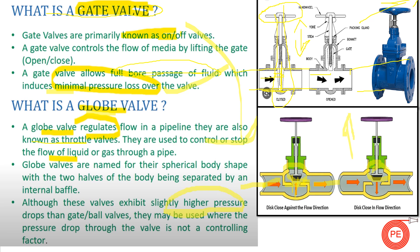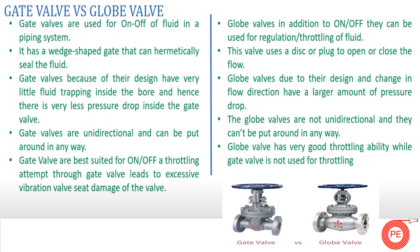Because of this directional change of flow, there is a slightly higher pressure drop in globe valves compared to gate valves. While selecting a globe valve, we take into consideration that there will be some pressure losses across the globe valve. Where we don't have any problem with pressure losses, we go for globe valves.